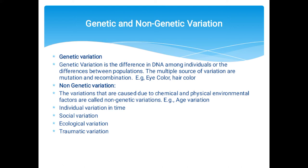Genetic variation is the difference in DNA among individuals or the differences between populations. If the amount of DNA varies from species to species, that will be called genetic variation. The multiple sources of variation are mutation — any change in the sequence of DNA — and recombination, meaning when a part of DNA is cut, removed, or recycled. Examples of genetic variation are eye color, hair color, etc.